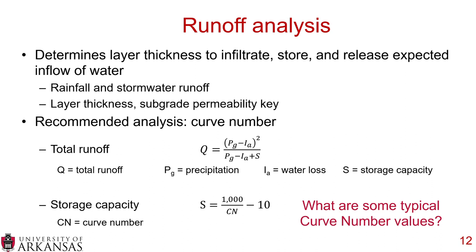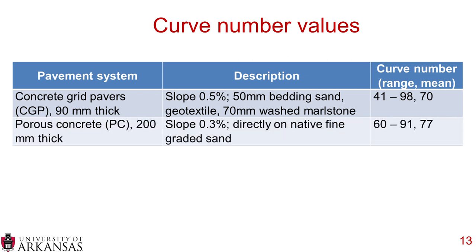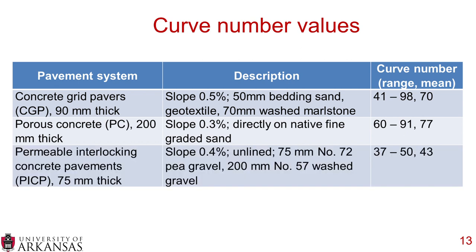What are some typical curve number values? For concrete grid pavers, typical curve numbers are 41 to 98 with a mean of 70. Porous concrete directly on native fine sand gives a curve number between 60 and 91 with a mean of 77. For permeable interlocking concrete pavements — PICP — 75 millimeters thick, the curve number is 37 to 50 with a mean of 43. There's a range within each paving system and also a range within the means.